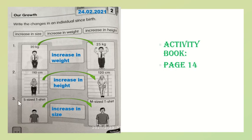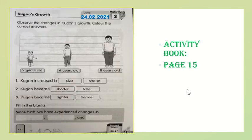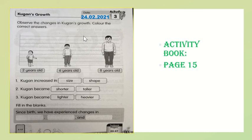So you write down the answers for number one, two, and three. This exercise is about our growth — pertumbuhan seseorang. After that, activity book page 15. Page 15 is also about growth. You will color it, so make sure you prepare your color pencils.